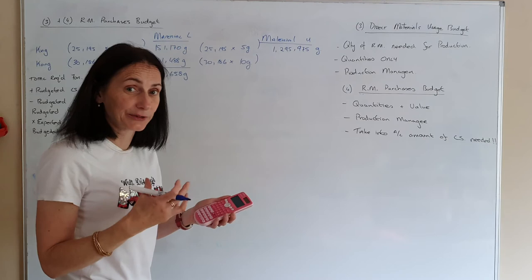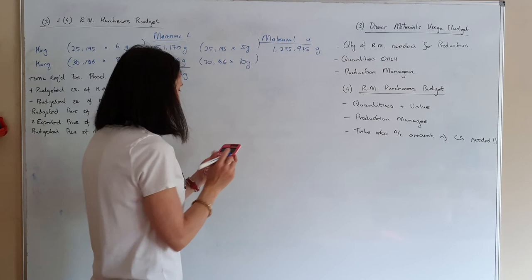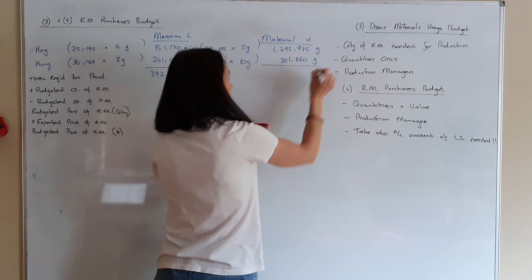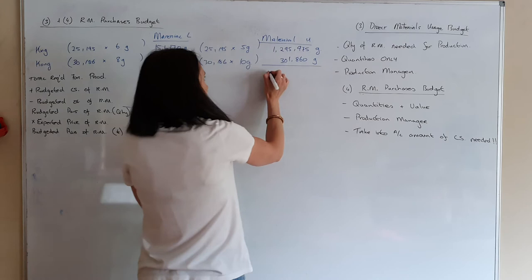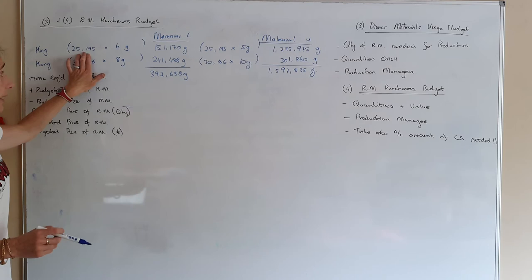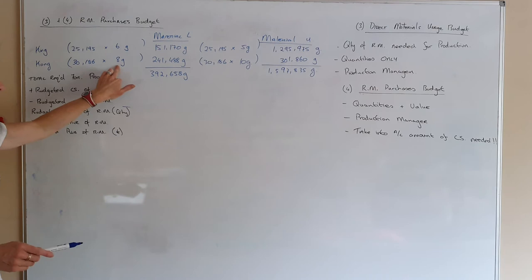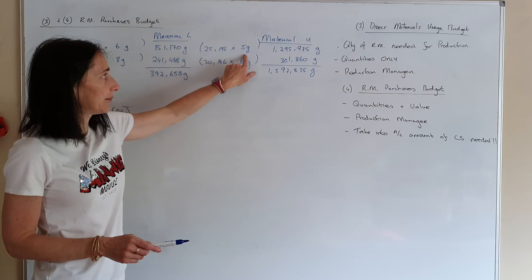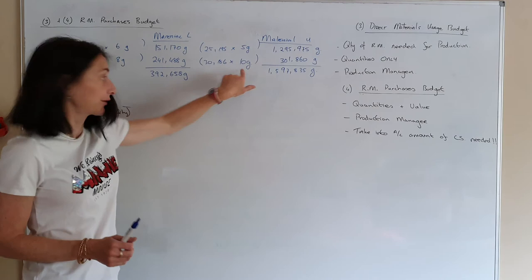For material U: King uses 5 grams and Con uses 10 grams. King: 25,195 × 5 = 125,975 grams. Con: 30,186 × 10 = 301,860 grams. In the honours, note that they could change units like grams — watch for that. Adding together: 1,295,975 grams total for material U. Note — in the honours they multiply by the number of units of materials needed for each product.